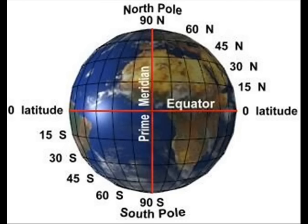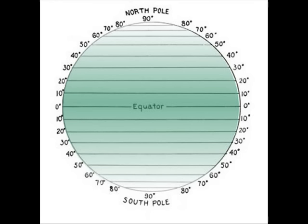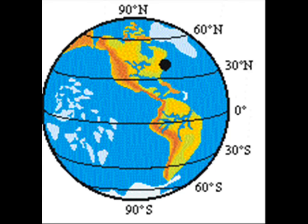Latitude is the angular distance measured in degrees. It tells how far from the equator any place happens to be — north or south from the equator, wherever a place may be. Latitude gives the angular distance scientifically.